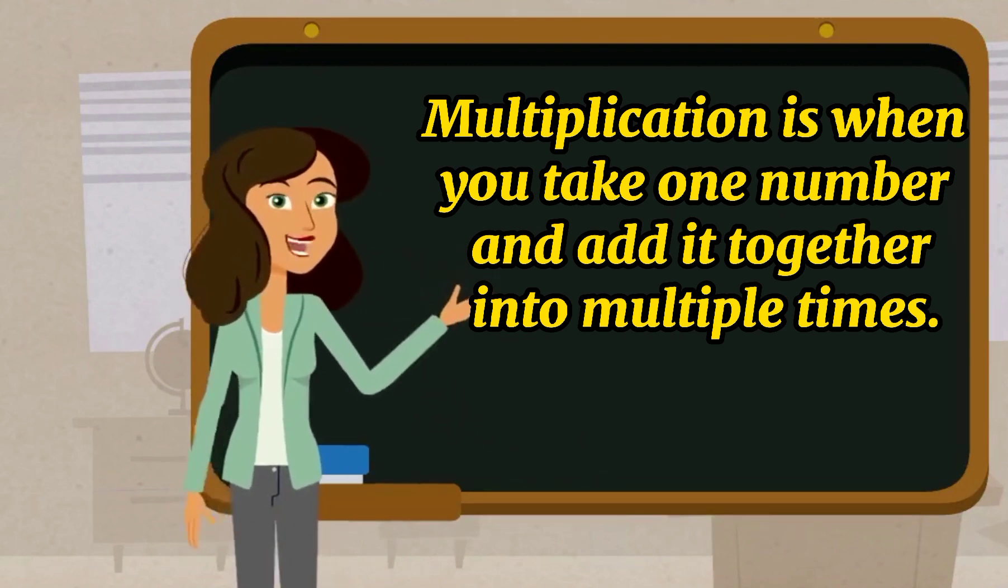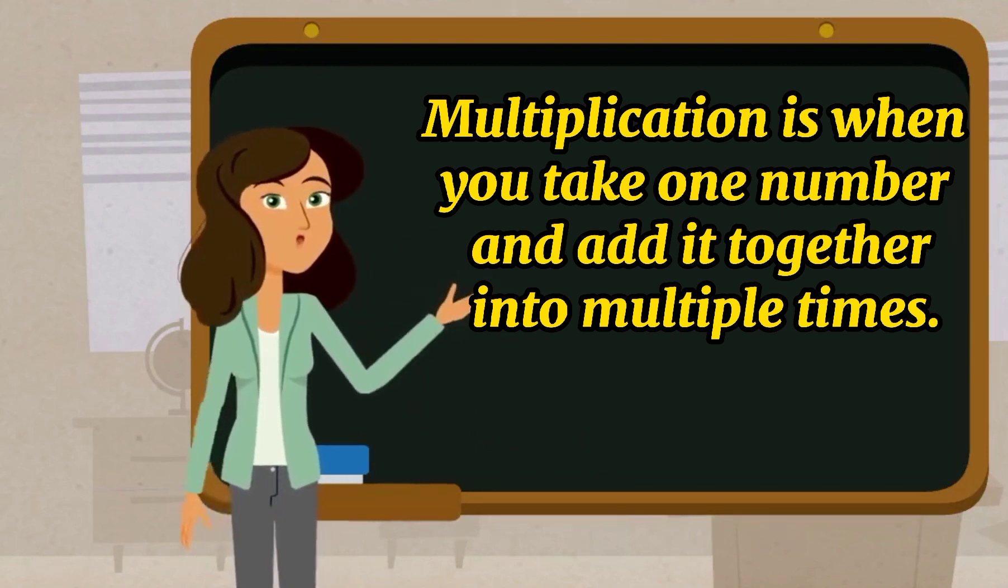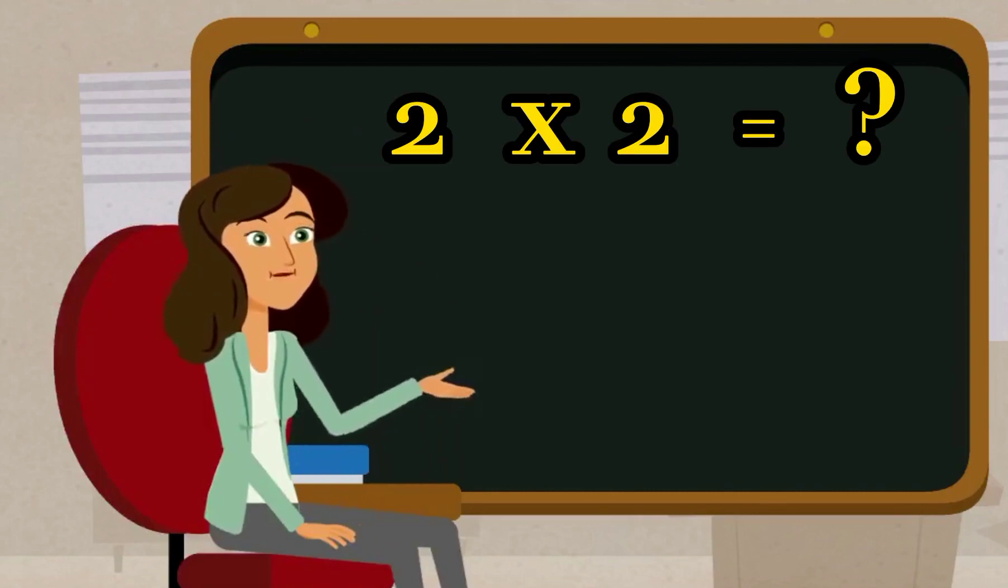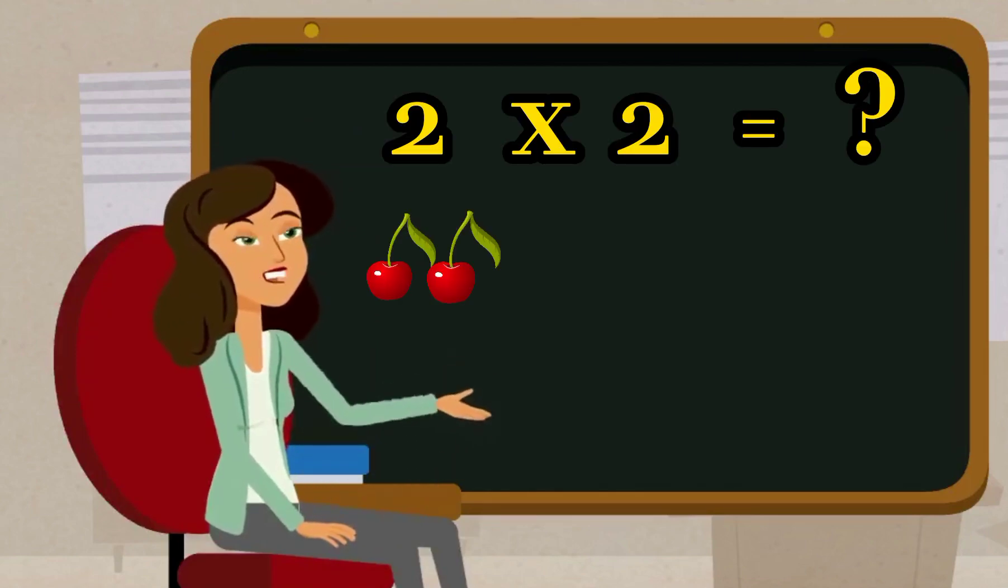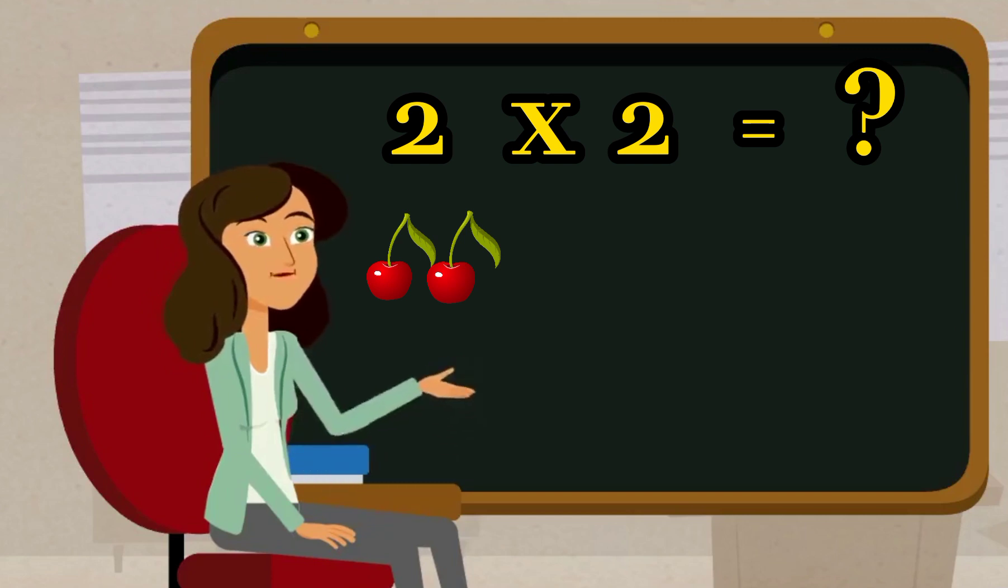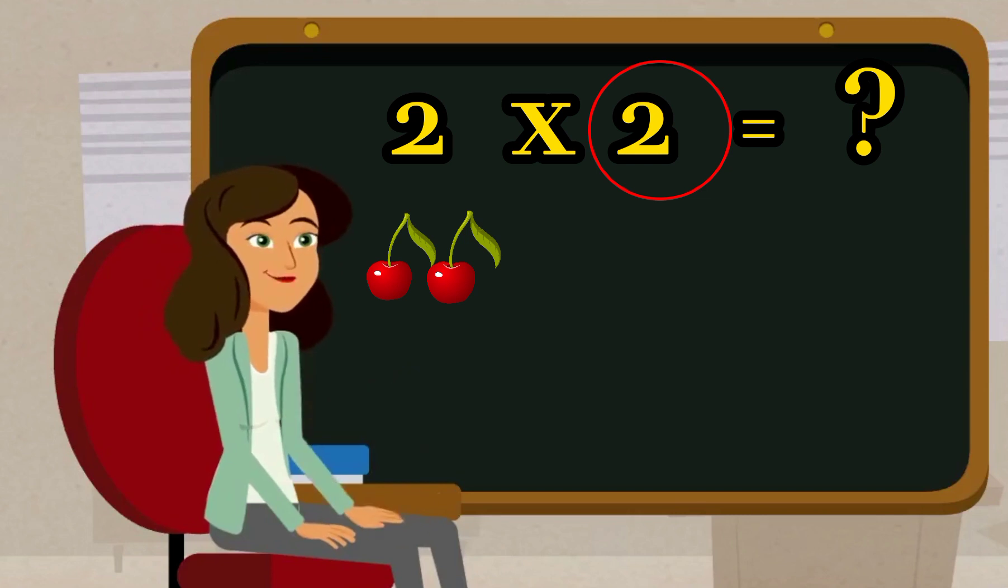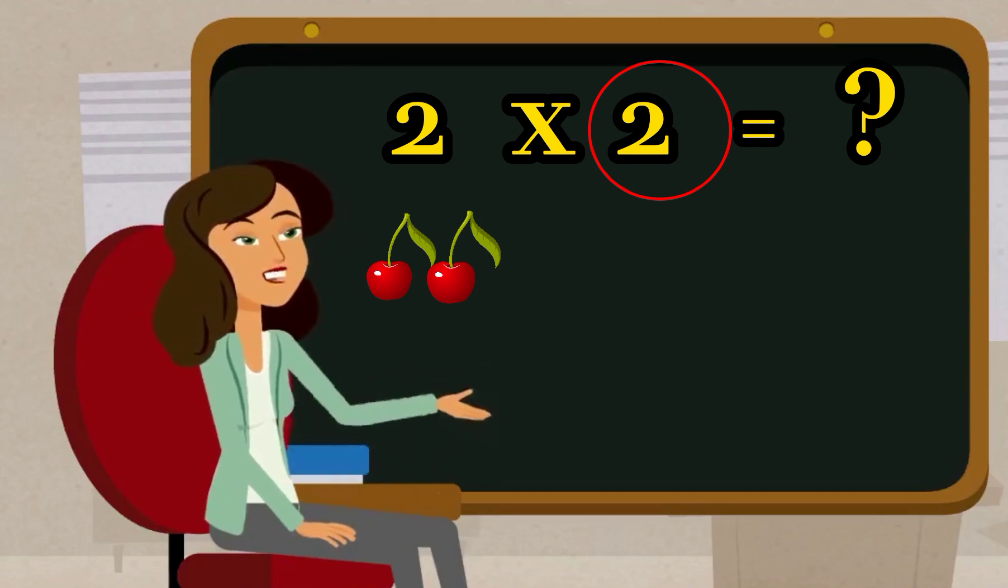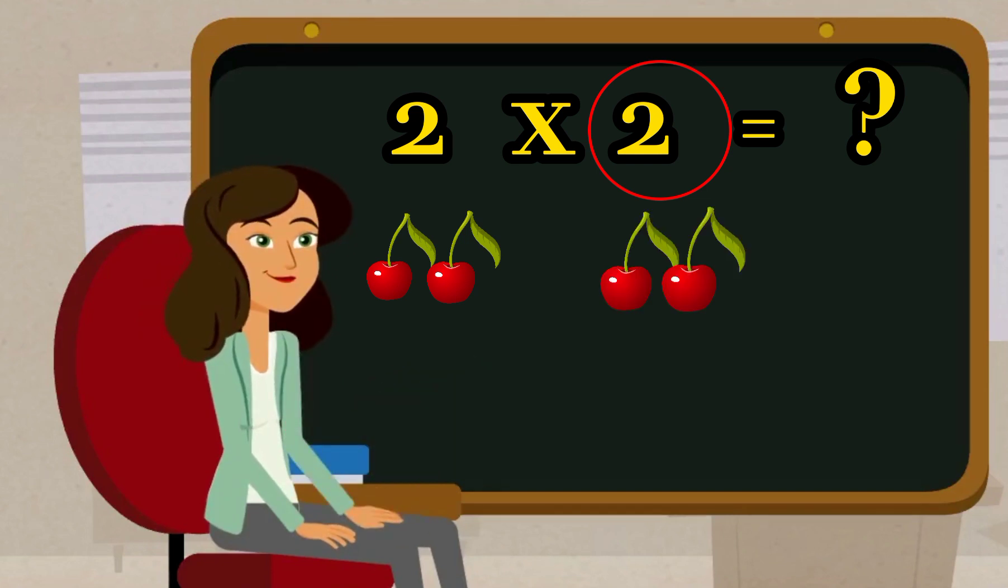Multiplication is when you take one number and add it together multiple times. For example, two multiplication by two. What will be our answer? Here we are taking two cherries and we are looking at another number that shows how many times we have to take two cherries. Yes, two times. Here we are taking two cherries two times.